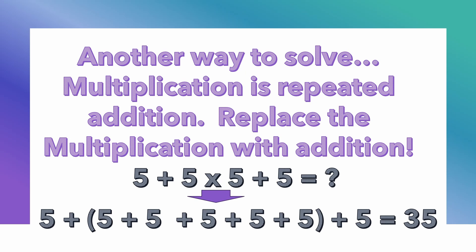Another way to solve this is that you should know multiplication is nothing more than repeated addition, so you can replace the multiplication with addition. Another way to represent 5 times 5 is adding five fives: 5 plus 5 plus 5 plus 5 plus 5 is the same thing as 5 times 5. I put parentheses around the fives where I converted the multiplication, but keep in mind that doesn't change anything.